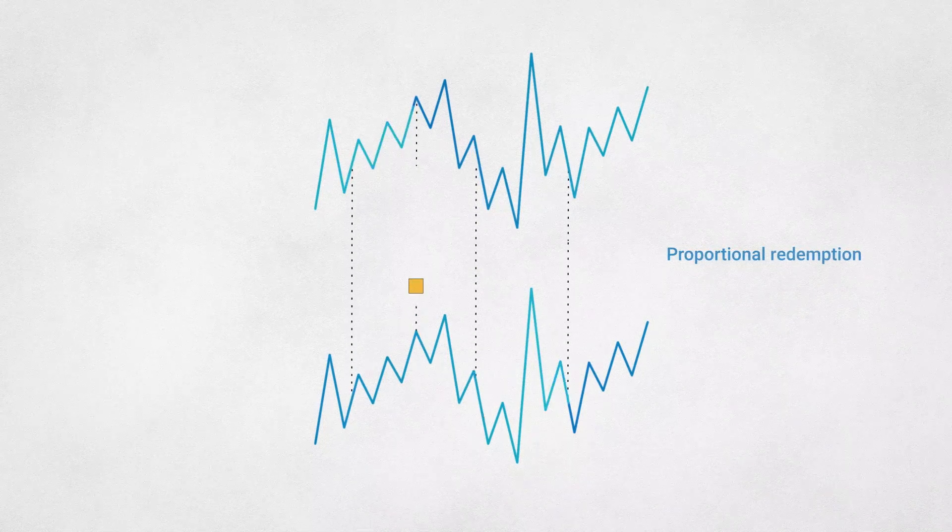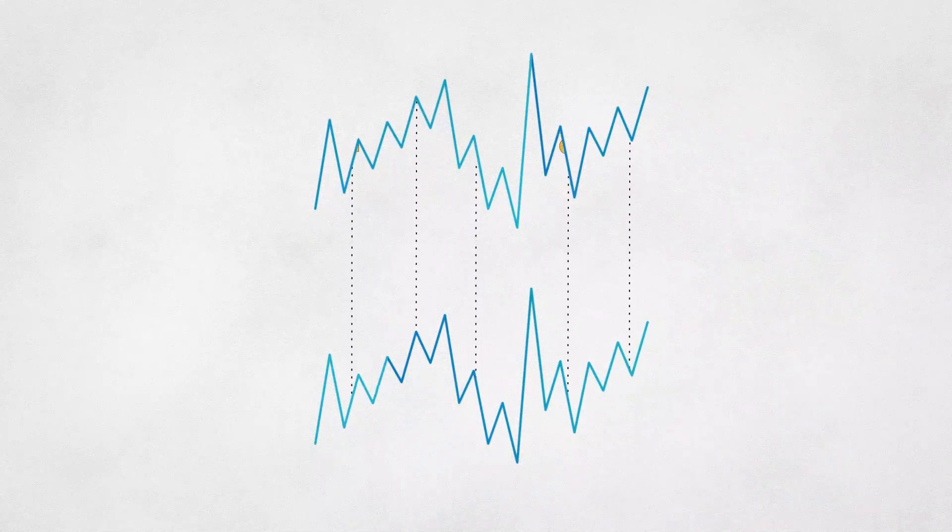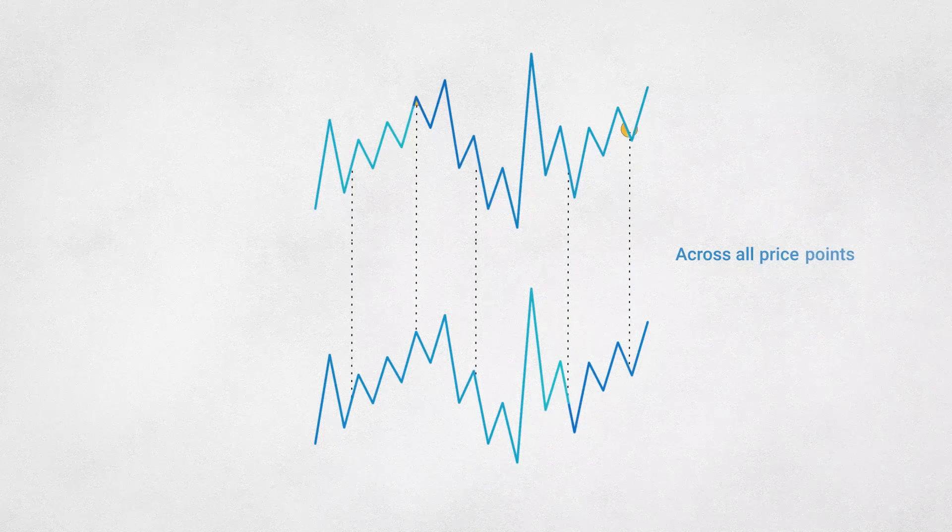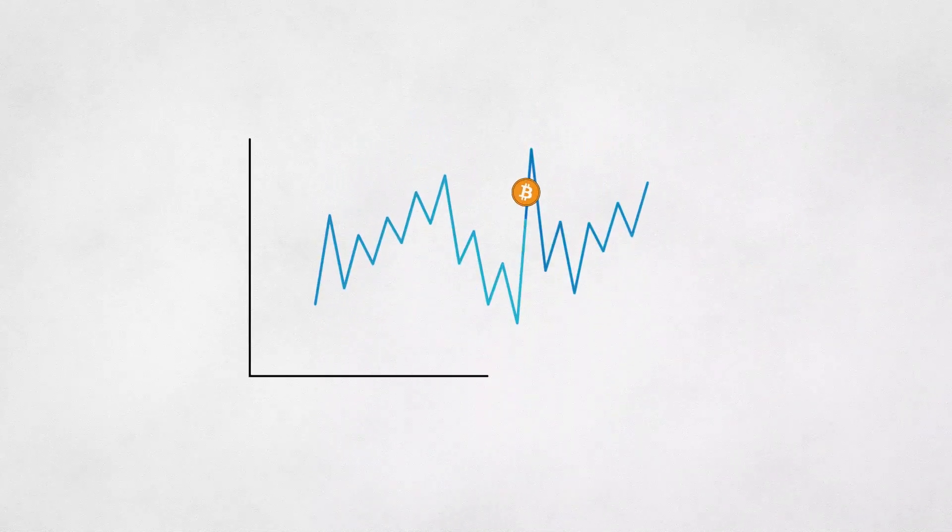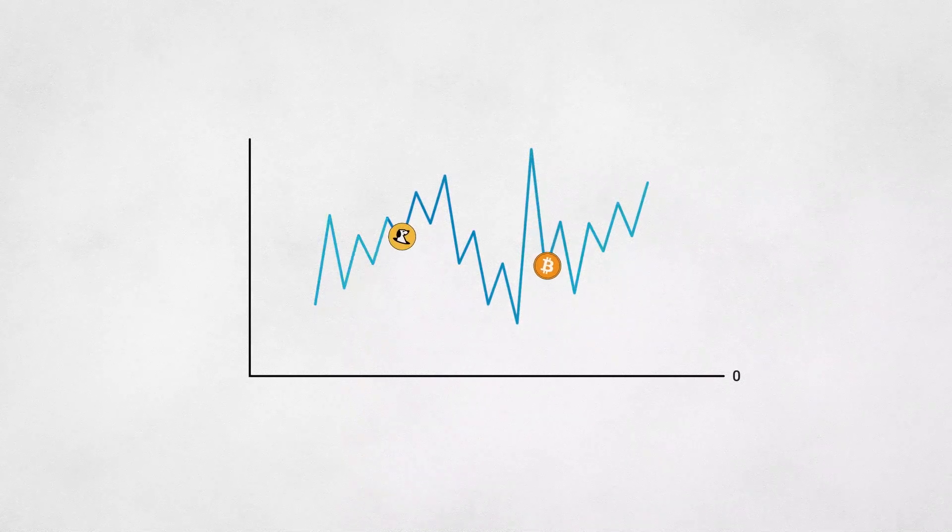Proportional redemption is the SPOT token's only mode of operation, and it functions continuously across all price points. Just as the price of Bitcoin can occupy any real number greater than zero without exploding, so can SPOT.